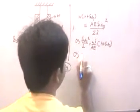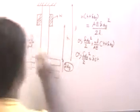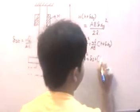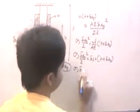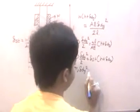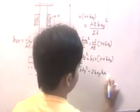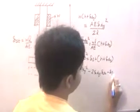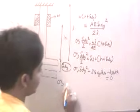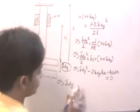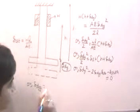I can write: delta_dy squared divided by 2 is equal to WL by AE, times (H plus delta_dy). I can also write this in the form of delta_dy squared divided by 2 times delta_st, since WL by AE is essentially delta_st, times (H plus delta_dy). Writing this as a quadratic equation gives: delta_dy squared minus 2 times delta_dy times delta_st minus delta_st times H equals zero.